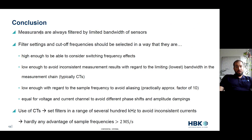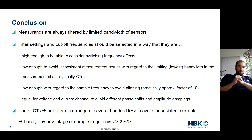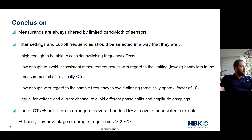In conclusion: measurements are always filtered by the limitations of sensor bandwidth. Filter cutoff frequency should be high enough to capture switching effects, but low enough to avoid inconsistent measurements, aliasing, and CT bandwidth issues. Keep the filter low enough relative to the sample frequency to avoid aliasing — by about a factor of 10. Use equal filter settings for voltage and current to avoid phase shifts. When using current sensors, set filters lower than the current sensor bandwidth. There is really no advantage to going above one mega sample. Most customers run at 500 kilohertz sample rate, filter to 100 or 50 kilohertz, and are perfectly happy with 8 kilohertz switching frequencies.